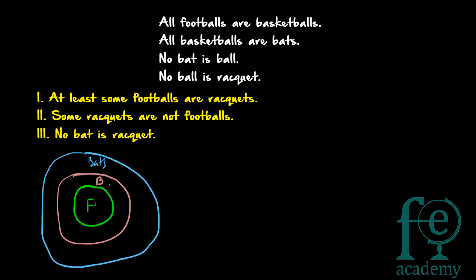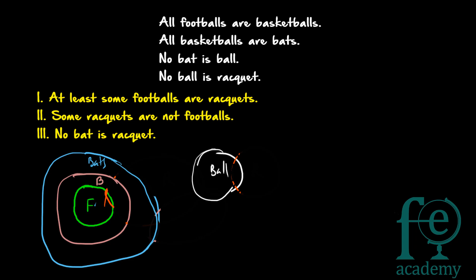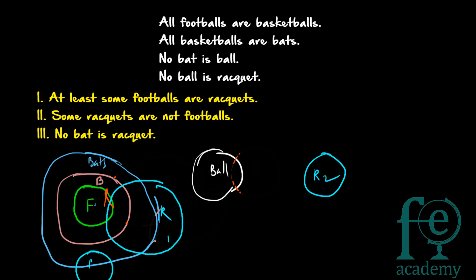No bat is ball means the ball circle must come outside the bat circle — there is only one possibility since bats is the outermost circle. So ball can only come outside. Now no ball is racket — what are the different possibilities? Racket can come fully outside all circles, or overlap only with bats, or overlap with bats and basketballs, or overlap with all three — bats, basketballs, and footballs. So these are the four ways racket can come.